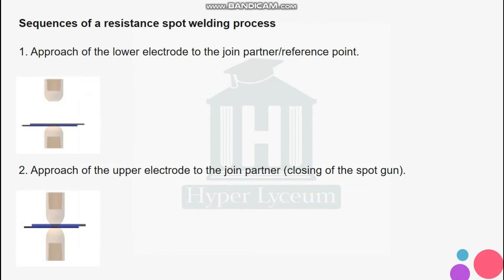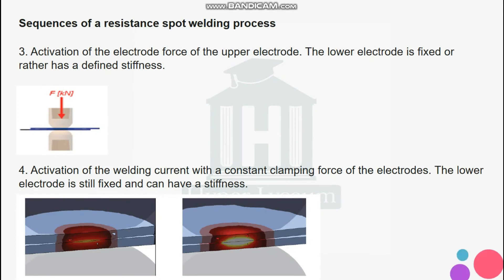Sequence of the resistance spot welding process: one, approach of the lower electrode to the joint partner reference point; two, approach of the upper electrode to the joint partner, closing of the spot gun; three, activation of the electrode force on the upper electrode — the lower electrode is fixed or has a defined stiffness; four, activation of the welding current with constant clamping force of the electrodes — the lower electrode is still fixed and can have a stiffness.